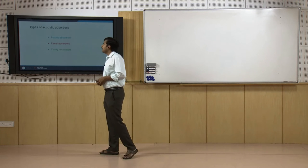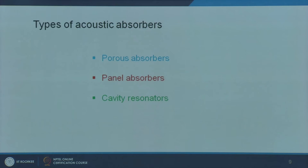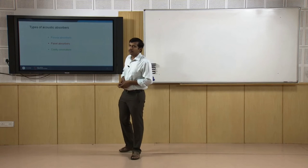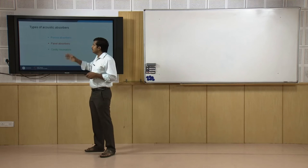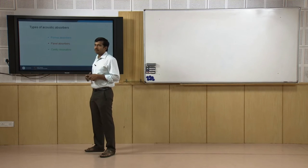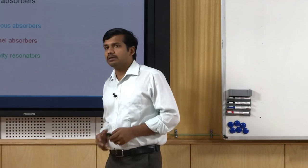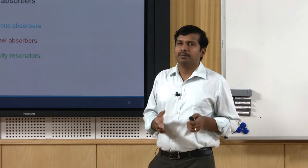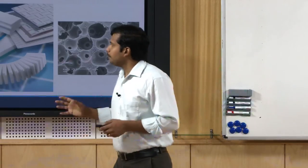There are three primary types of acoustic absorbers. The first is porous absorbing material, the second is panel absorbers, and the third is cavity resonators. Each type has a specific bandwidth or frequency spectrum where it performs very well, though performance can be extended to other frequencies. Their primary performance areas are different.